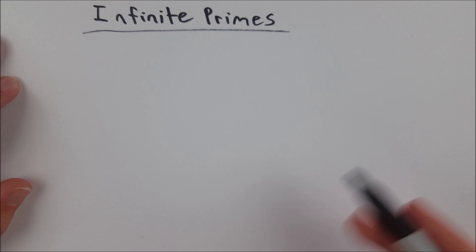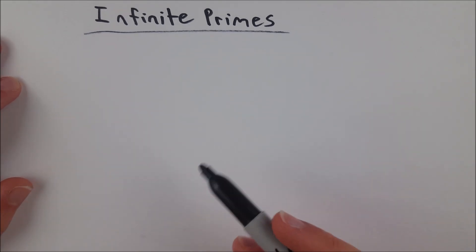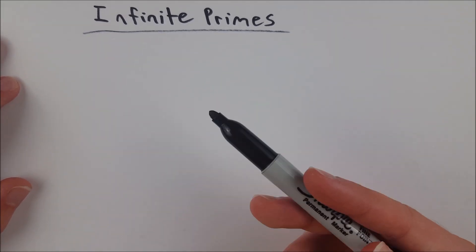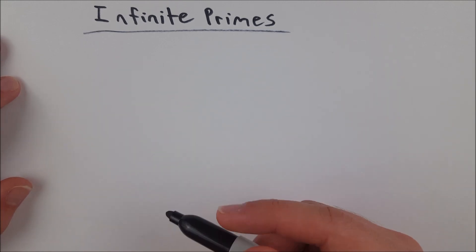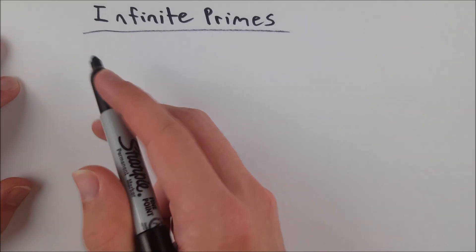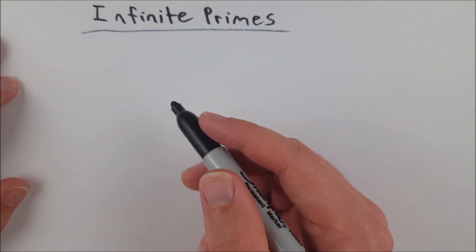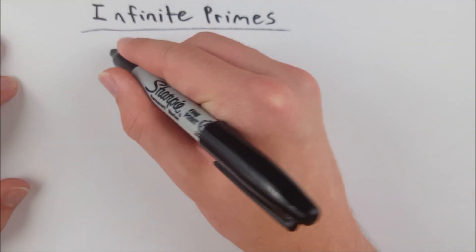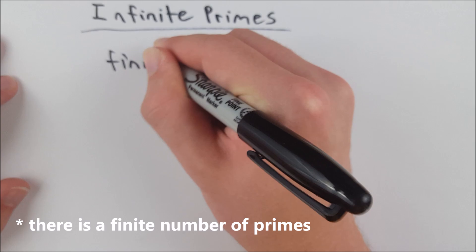And as usual, I'm not going to write out the whole proof formally. I'll just walk you through it, and if you're looking to write the proof formally, these lessons should give you a perfectly good idea of how to do so. So for starters, we're going to assume the opposite of what we're trying to prove is true. So we're going to assume that there are a finite number of primes.